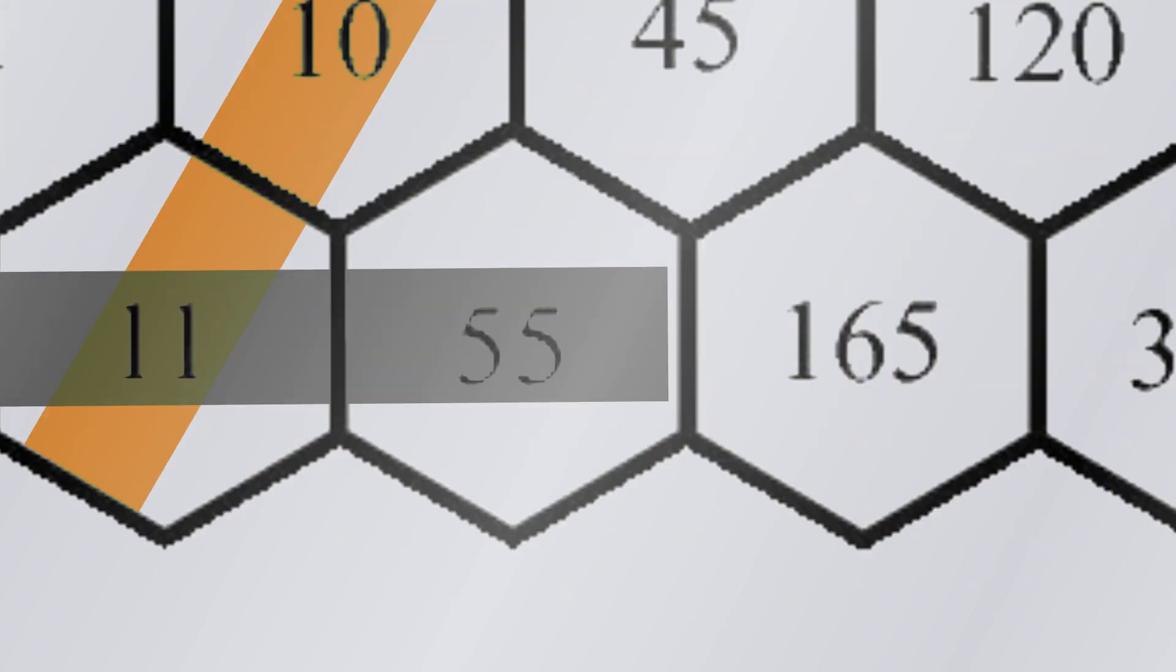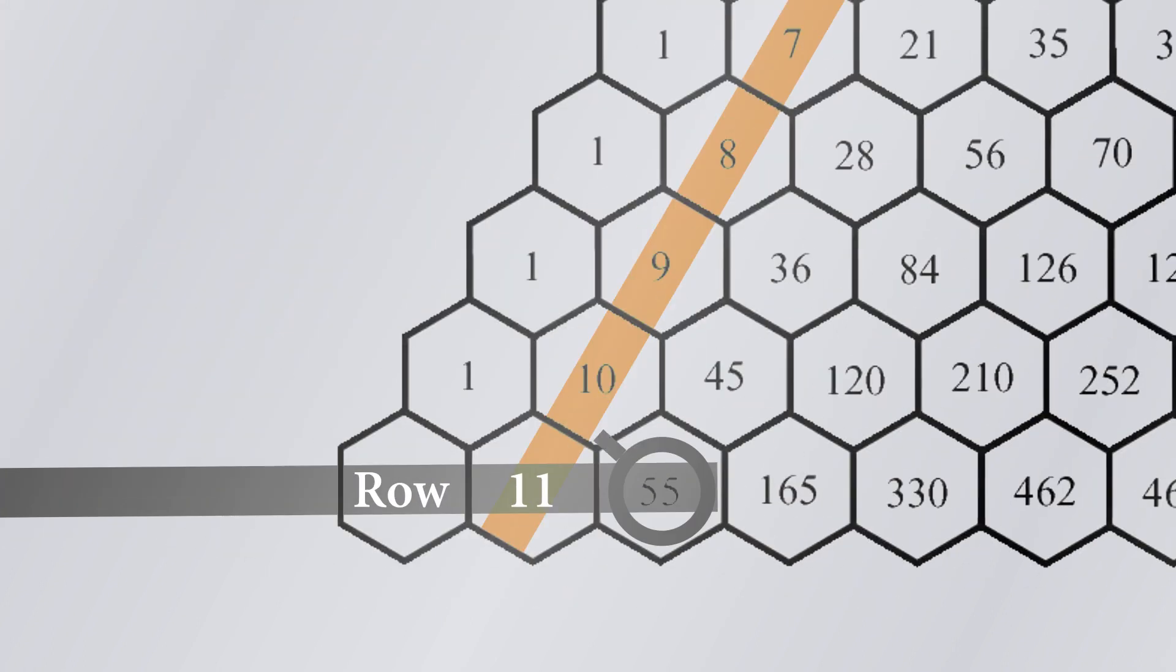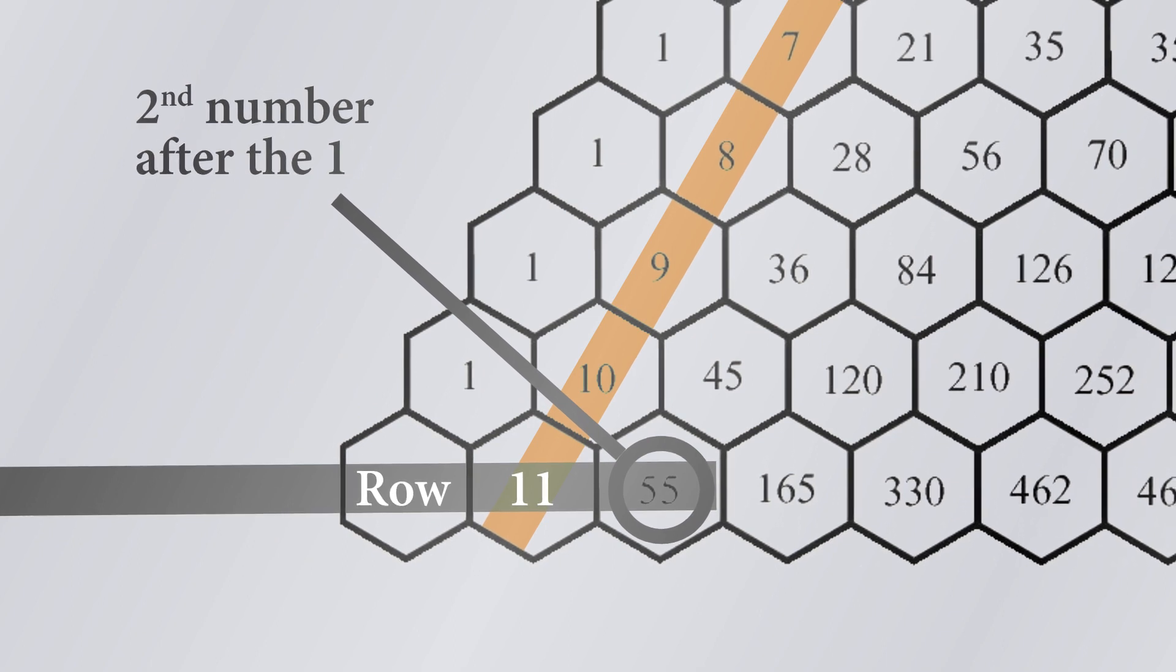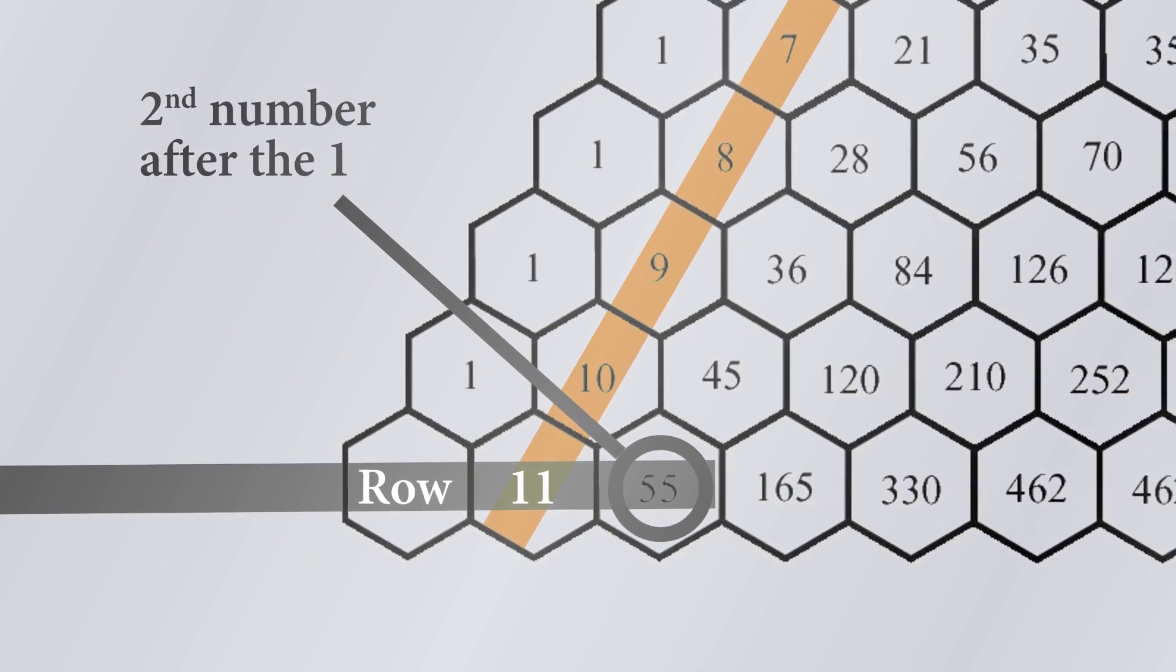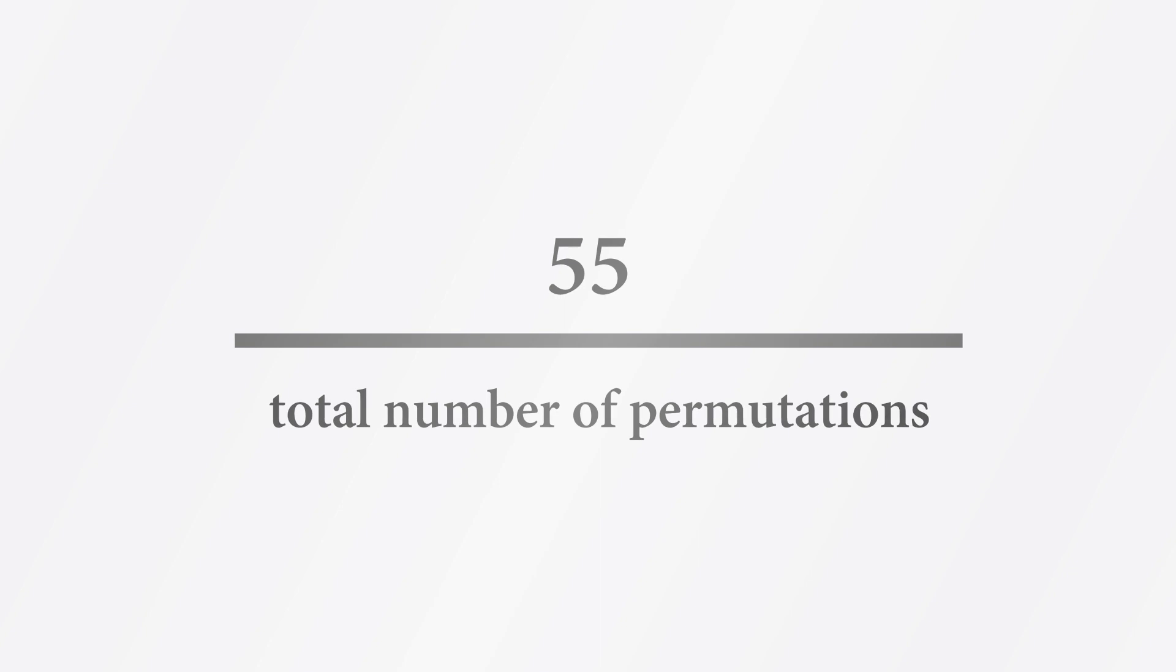It turns out there are 55 different ways that you can pick the positions of these two heads out of these eleven flips of the coin. If I then divide that by the total number of possible permutations, then I can calculate the probability of two heads in this flip of eleven coins being roughly three percent.